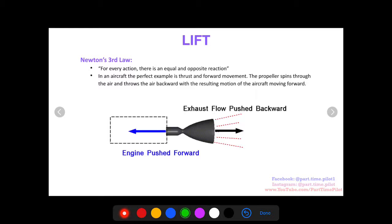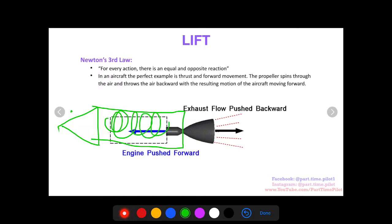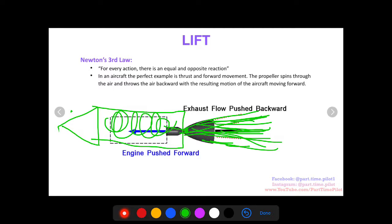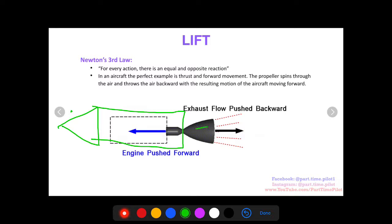Another good example is a rocket engine — this is actually a very clear example, which is why I chose it for the visualization. In our rocket nozzle, we have a bunch of fuel that is mixed, burned, and thrown out of the rocket at very high speeds. That action — throwing out masses of burnt fuel propellant — produces a reaction of the engine propelling the rocket forward. That's Newton's Third Law as it pertains to aerospace vehicles and even airplanes with a common propeller.